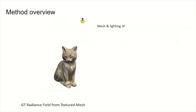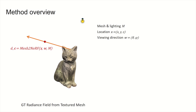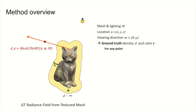Given a mesh with environment lighting, Mesh2NRF aims to compute the ground truth color and density for any 3D location and viewing direction. For any point, we define the density to be infinite within the mesh surface's thickness, while the density values are zero elsewhere.